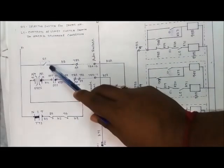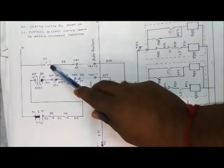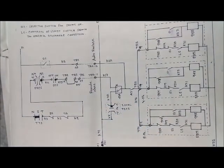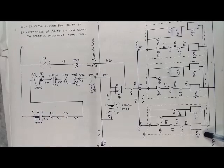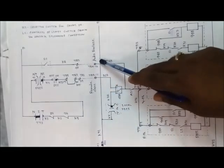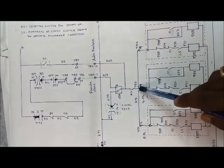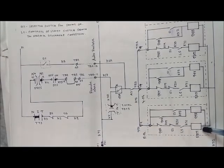Contact 21 is for auto-reclose in a transient fault. If a single-phase tripping occurs — for example, the R phase pole opens in a transient fault — after a dead time of 600 milliseconds for a 220kV circuit breaker, this contact will close from the distance relay. The positive DC comes through this part to the common terminal and through the closing coil of the R phase, turning ON the R phase pole. This is the function of the auto-reclose.